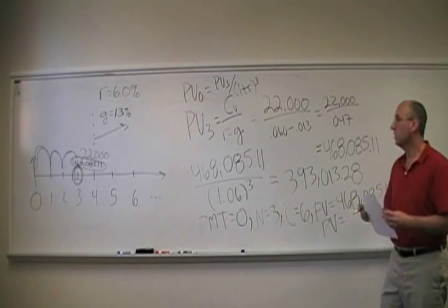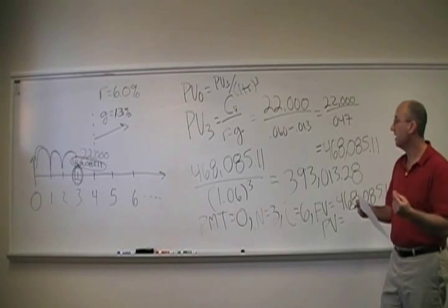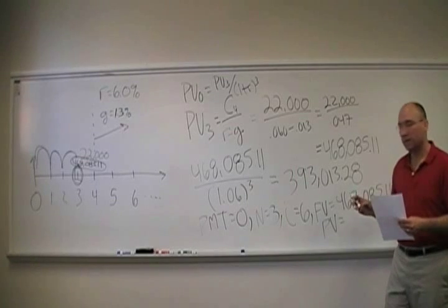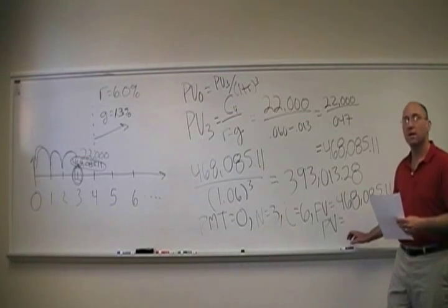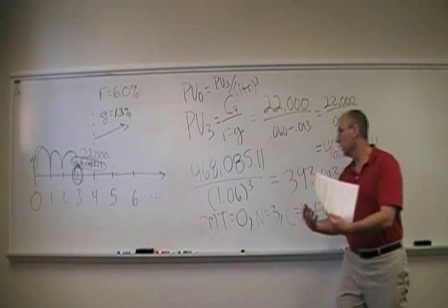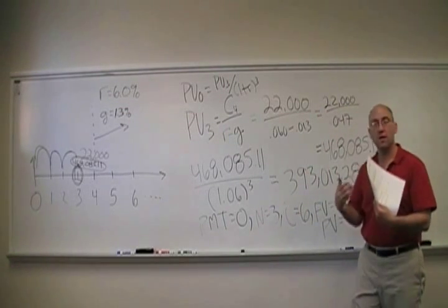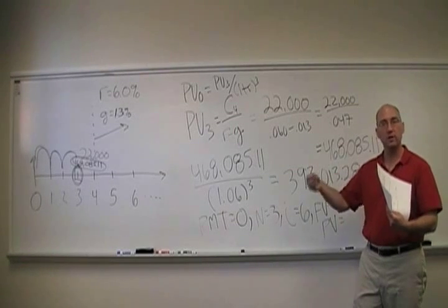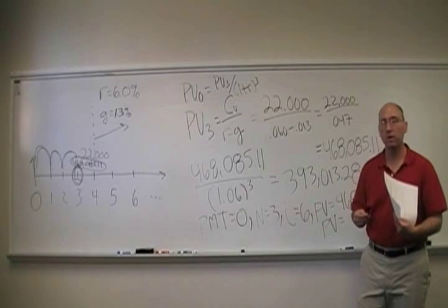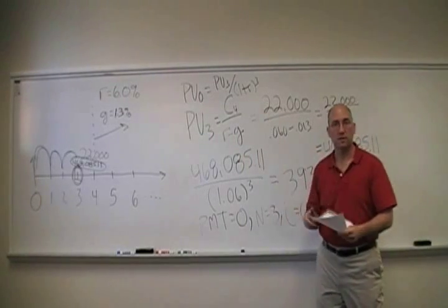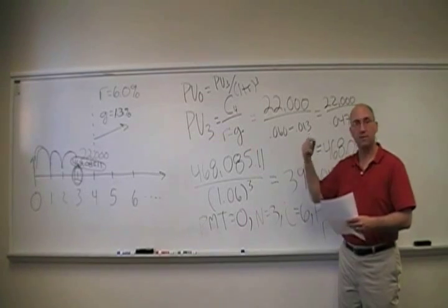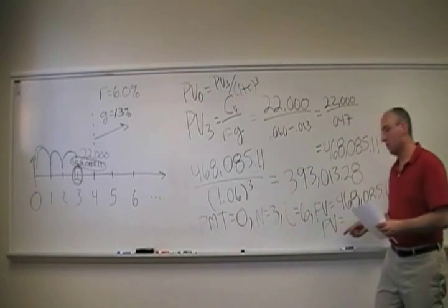Then you're going to want to solve for PV, and if you do, you'll get the opposite. You'll get negative 393,013.28, basically telling you that's the value of the building today. If you were to invest $393,013.28 today in a building, three years later, it would be worth 468,085.11 at 6%. So again, you can just use all the equations, or when you want to figure out the value as of today, your calculator can help you.